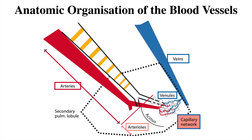Coming next to the anatomical organization of the blood vessels. All the arteries follow the bronchioles and bronchi and divide along with them. There are increased numbers of arteries which branch out, so there is always a supranumerary artery branching out — the number of arteries is always slightly more than the number of bronchi. The veins follow the interlobar or interlobular septa, and finally there is a capillary network around the alveolus.